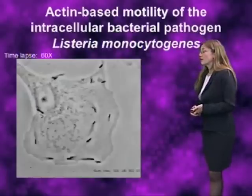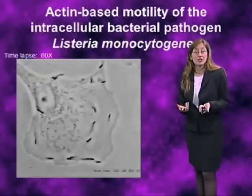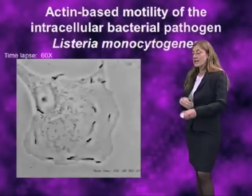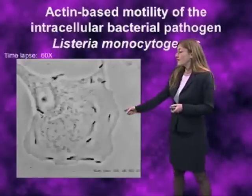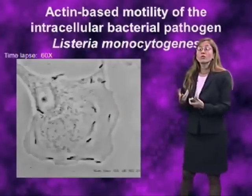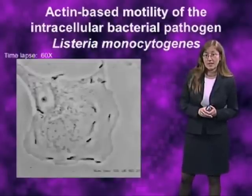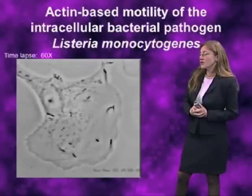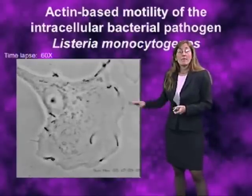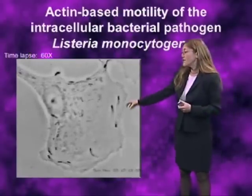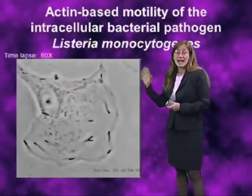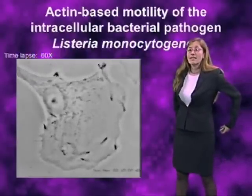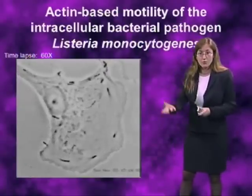The movie I'm about to show is a reenactment of that process, where we've taken an epithelial cell in tissue culture and fed it some of these bacteria. The bacteria have invaded the cell and, at the time this movie was taken, had been replicating within the cell for about five hours. This is time-lapse, speeded up about 60-fold over real time. The bacteria — these little dark rods — are zipping around inside the cells, and behind each moving bacterium you can see a phase-dense streak made up of actin filaments. The bacteria move very straight, rapidly, and persistently by assembling actin filaments behind them, using the force generated by that actin assembly to push themselves forward through the cell.